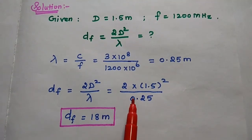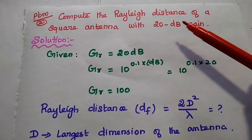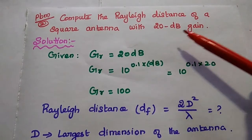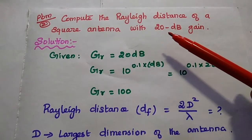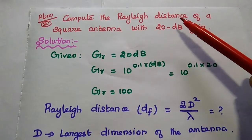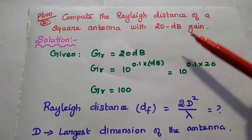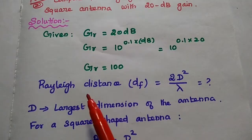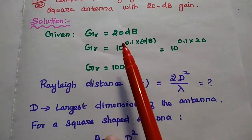It is a very simple problem. The next important problem is to compute the Rayleigh distance of a square antenna with 20 dB gain. In the solution part, first we write the given data: the receiving antenna gain is 20 dB.